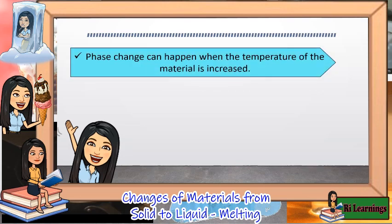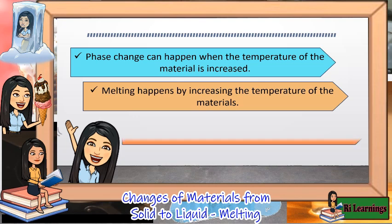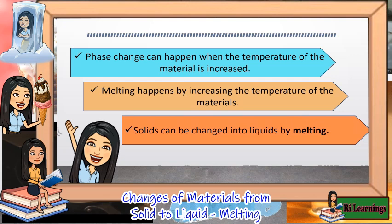Remember, phase change can happen when the temperature of the material is increased. Melting happens by increasing the temperature of the materials. Solids can be changed into liquids by melting.